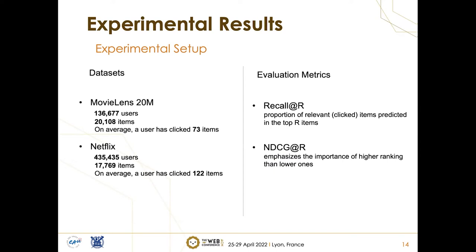For the evaluation metrics, we use Recall@R and NDCG@R. Recall@R is the proportion of clicked items predicted in the top R items, reflecting the real world where we focus on the top R items on a web page or app. However, Recall@R does not differentiate items predicted at the top versus the bottom, as long as they are within the top R. NDCG overcomes this limitation by emphasizing the importance of higher rankings over lower ones. Across our multiple experiments, we use these two metrics to evaluate performance.